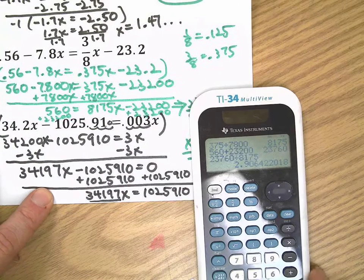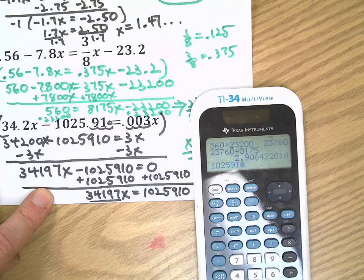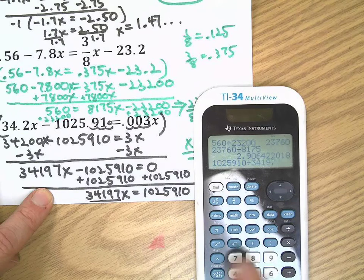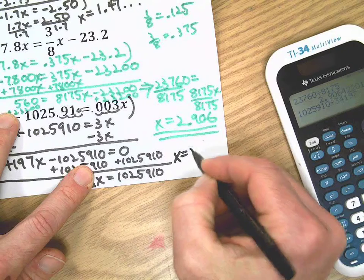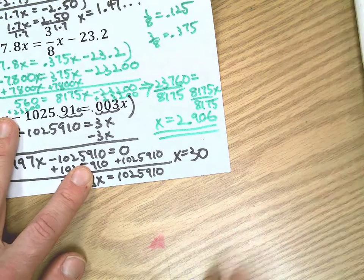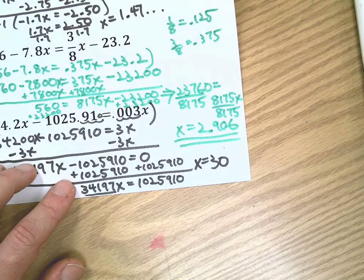Here's my high-tech calculator, super high-tech. One zero two five nine one zero divided by three four one nine seven. Look at that. There we go.